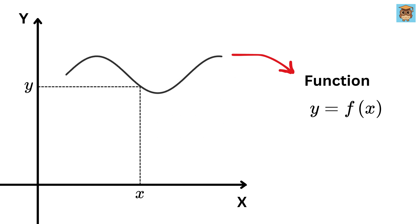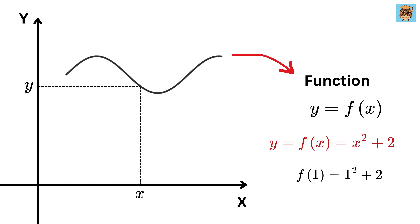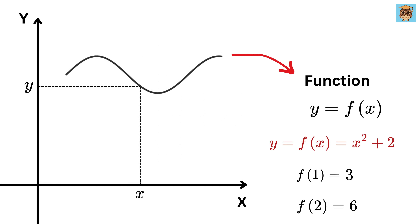For example, if f of x is x squared plus 2, then when x is 1, f of 1 is 1 squared plus 2, which is 3. When x is 2, f of 2 is 2 squared plus 2, which is 6. You get the point.